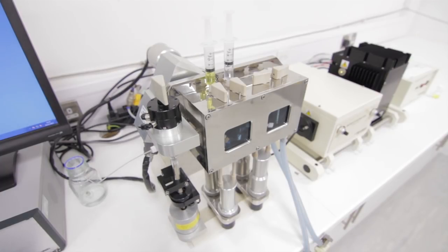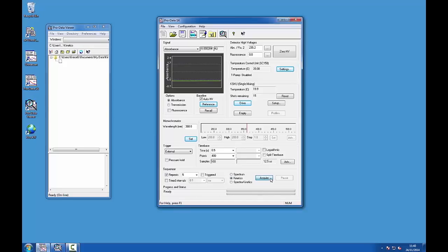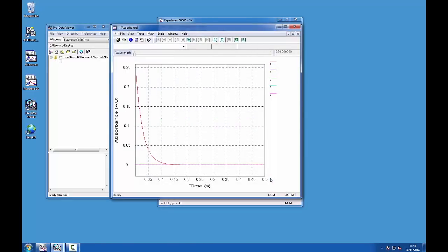Ensuring the drive valves are set to the drive position, click the drive button several times to flush the remaining background solution out of the cell. Finally, click acquire to perform the stop-flow experiment and acquire your data.